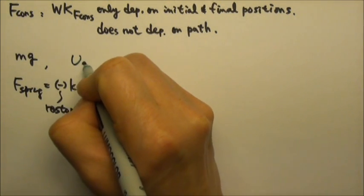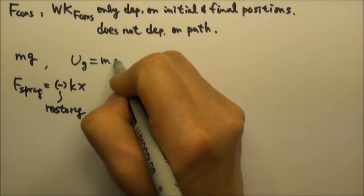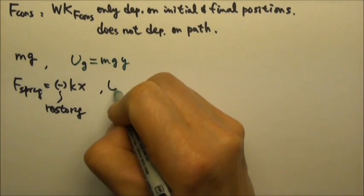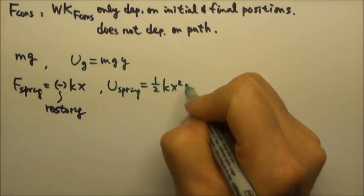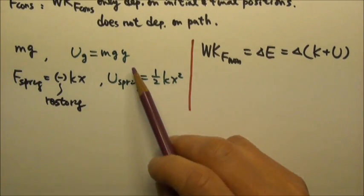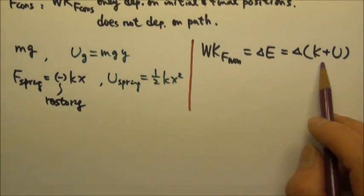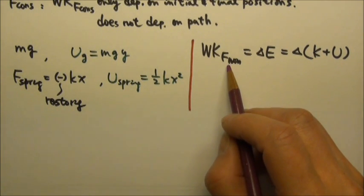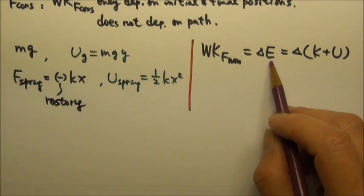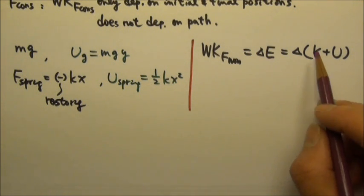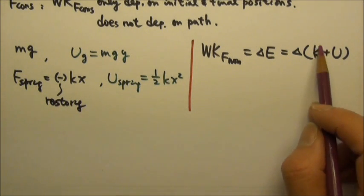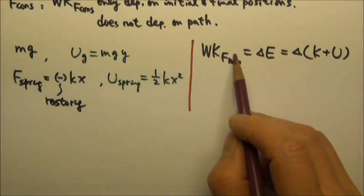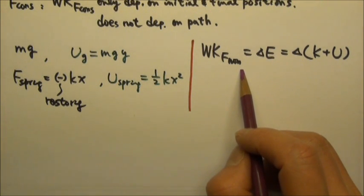Because the work done by a conservative force depends only on the initial and final positions, we can define a potential energy for each one. For mg, we have gravitational potential energy mgy. For the spring force, we have elastic potential energy ½kx². The work-energy theorem then becomes: the work done by non-conservative forces equals the change in total mechanical energy, which includes both kinetic and potential energy. Total mechanical energy changes only when non-conservative forces such as friction, air resistance, or applied forces add or remove energy.